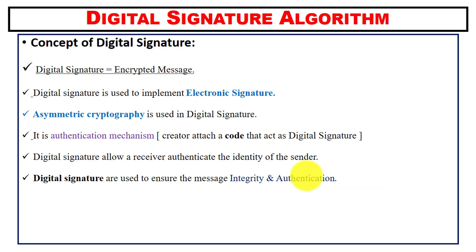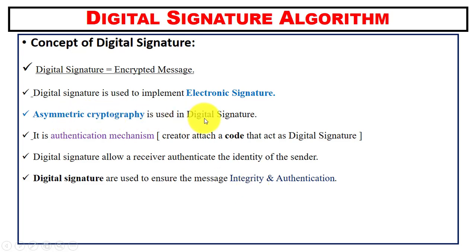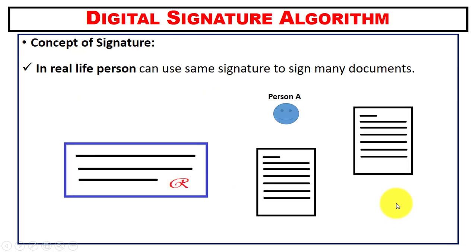The same concept is used in digital signatures, but with a key difference: in digital signatures we use an electronic signature instead of a physical one. This electronic signature is nothing but a code attached by the creator. The digital signature is an encrypted message used as an authentication mechanism. Using a digital signature, the receiver can authenticate the identity of the sender and the integrity of the message. We use asymmetric cryptography — that is, public and private keys — for encryption and decryption.